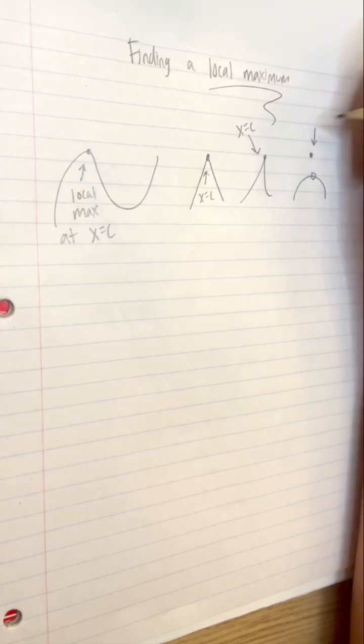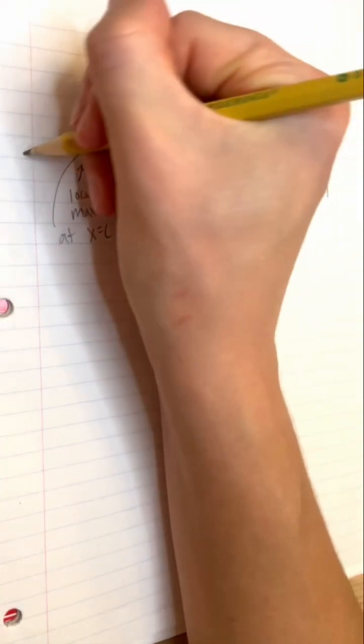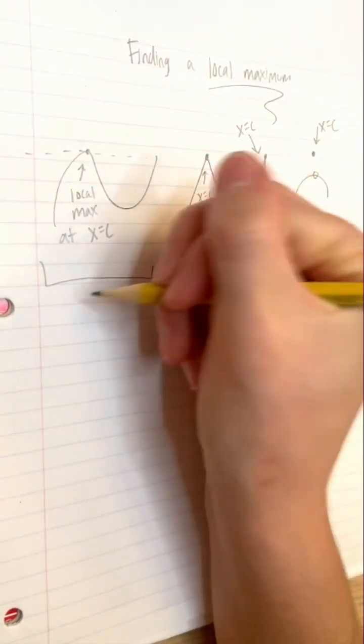Notice that at the top of the differentiable function, the tangent line is flat. Its slope is 0, so f prime of c is 0.